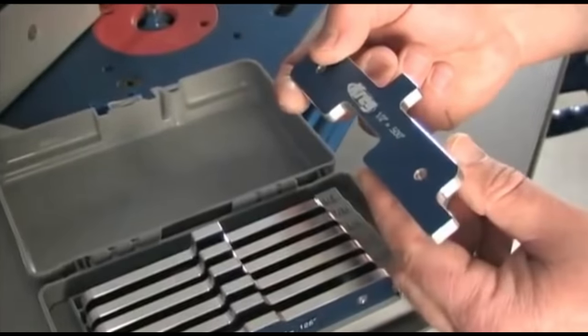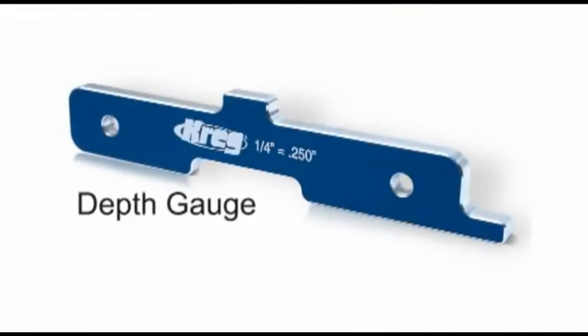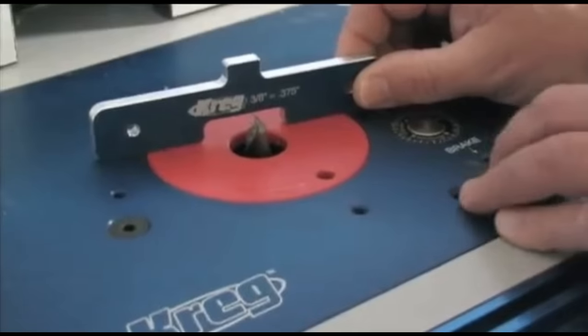Kreg Precision Router Table Setup Bars are made of high-quality aluminum and they are actually three gauges in one. Start with the depth gauge to set the perfect bit or blade height.